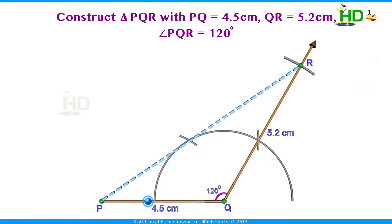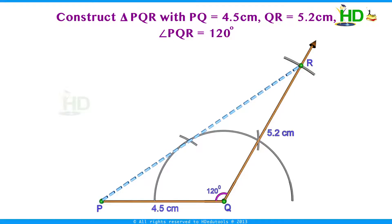Now with Q as the center, taking 5.2 cm as radius, draw another arc to cut this line — this length is 5.2 cm. Mark the point where this arc cuts the line as R. Now join PR. This is the required triangle PQR with PQ = 4.5 cm, QR = 5.2 cm, and angle PQR = 120 degrees.